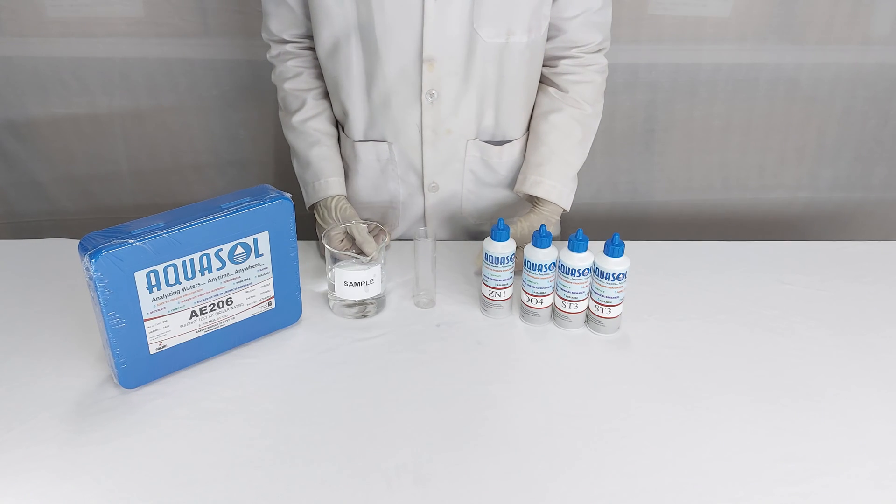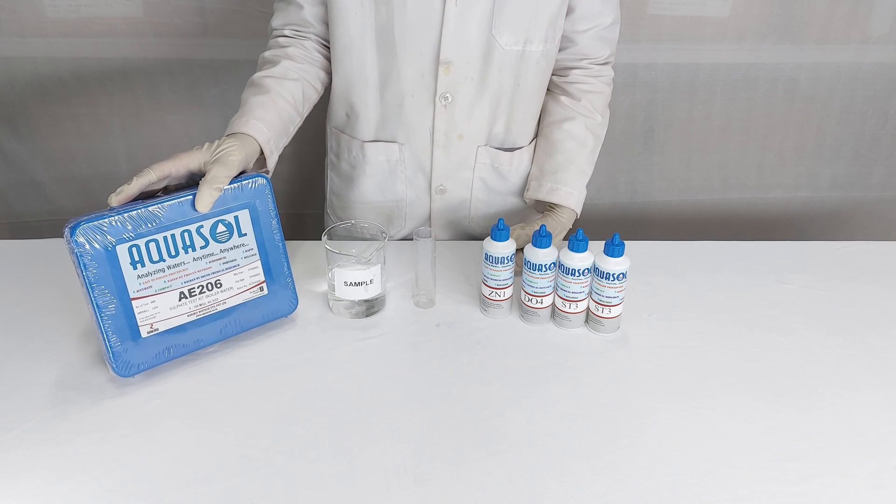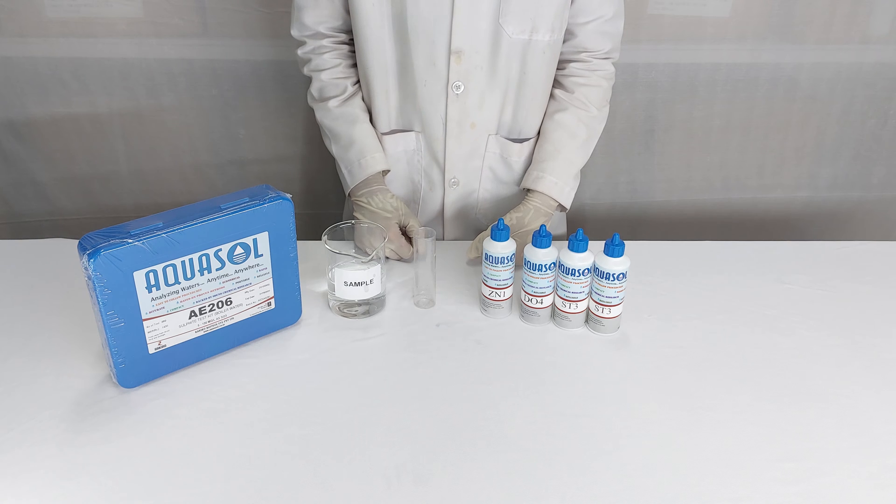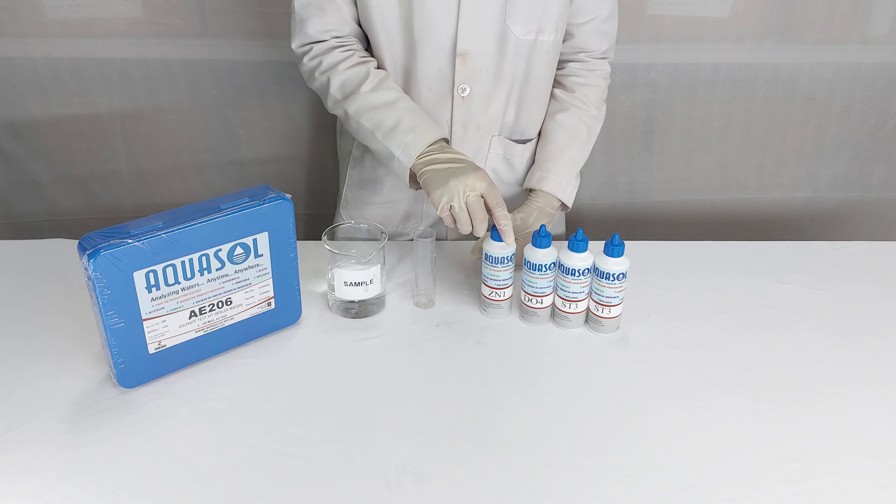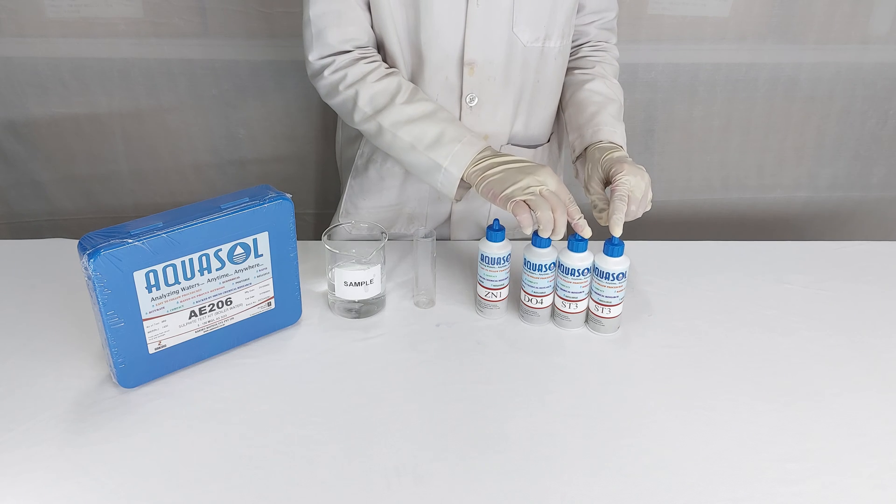We are demonstrating the sulphide test kit. Aquasol AE206 test kit is used to check sulphide in water. The kit contains reagents Zn1, Do4, St3, and a test jar.